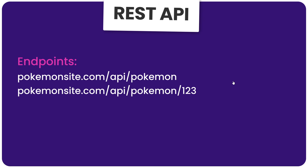So when we use a REST API we typically send HTTP requests to specific endpoints like this to interact with a certain type of data. For example, we might send a GET request to an endpoint to fetch a list of Pokemon, and we could also send a POST request to that endpoint to add a new Pokemon to the dataset. We might send a GET request to an endpoint with an ID on the end to fetch a single Pokemon, and we might also send a DELETE or PUT request to that endpoint to delete or update data. The server would handle requests to those endpoints by connecting to a database where the data was stored, and either fetching the data and sending it back to the client or updating or deleting it. So this is your traditional REST API.